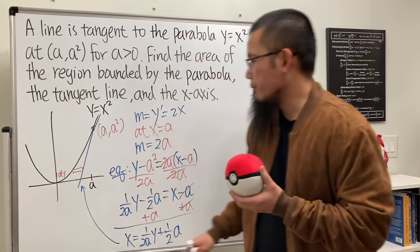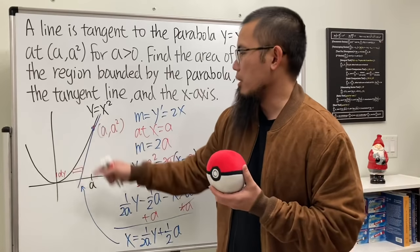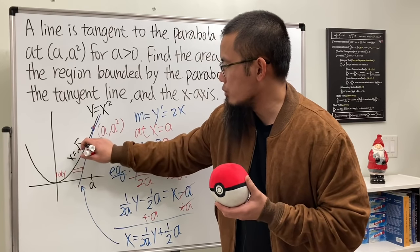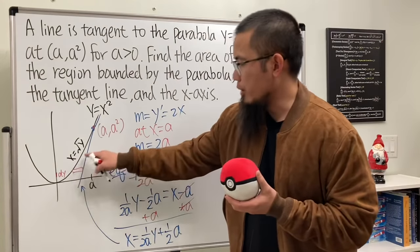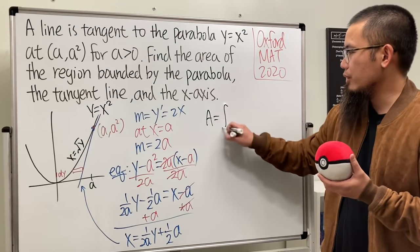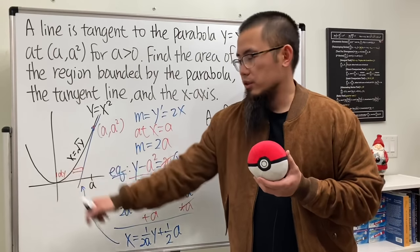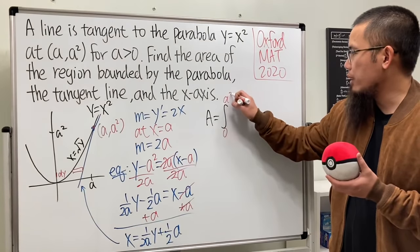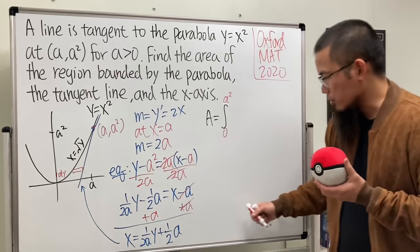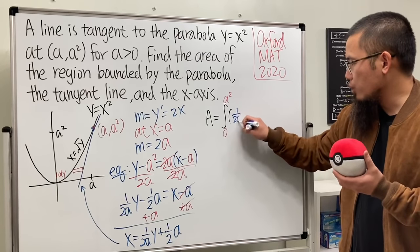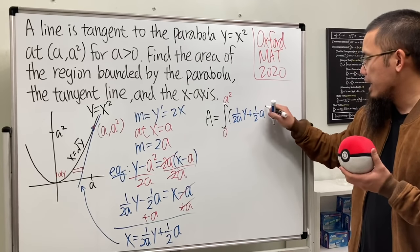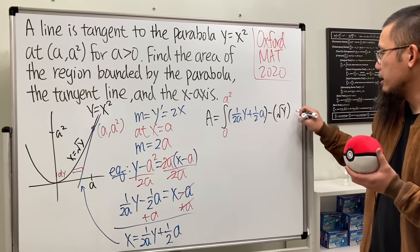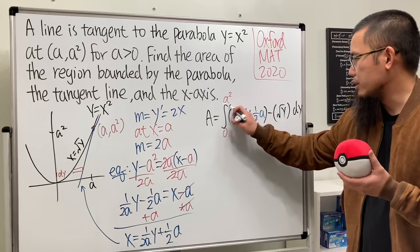We also need x for the parabola. Since y equals x squared, taking the positive square root gives x equals √y. Now we can set up the area integral in the y world, integrating from 0 to a². The integrand is the right function minus the left function: (1/2a)y + (1/2)a minus √y, all with respect to dy.